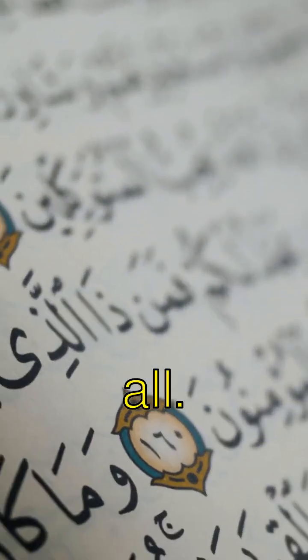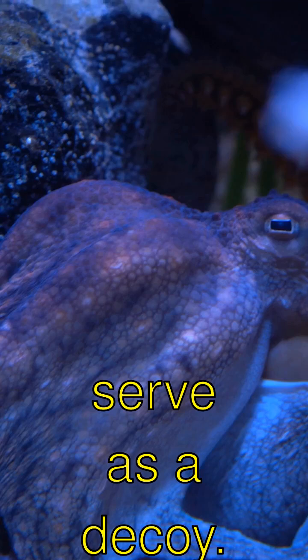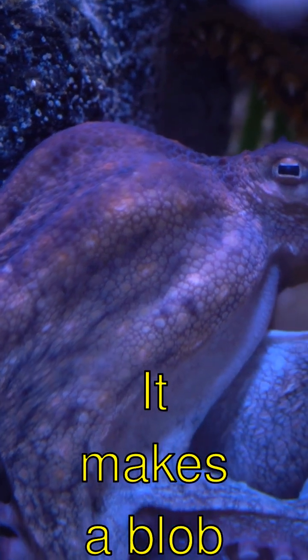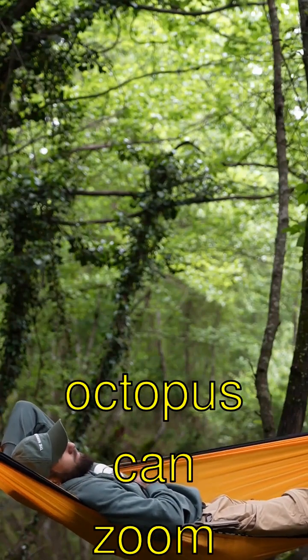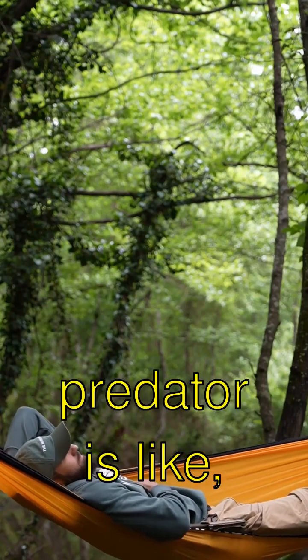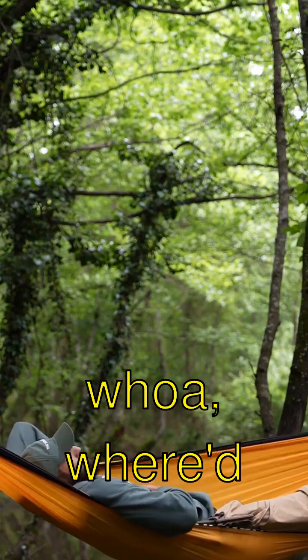But that's not all. The ink can even serve as a decoy. It makes a blob that looks just like the octopus. This means the octopus can zoom away while the predator is like, whoa, where'd it go?